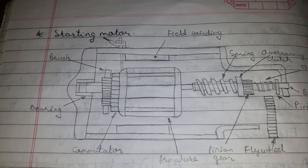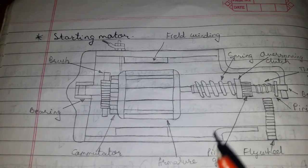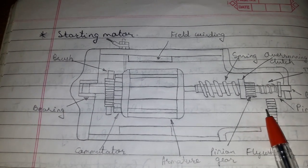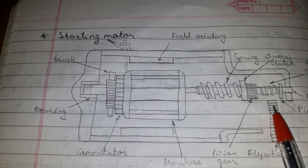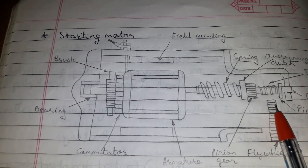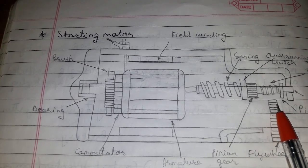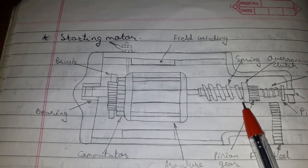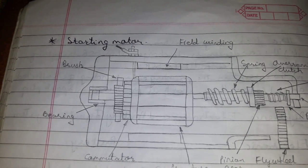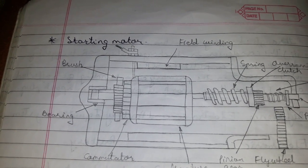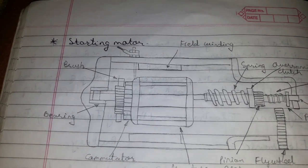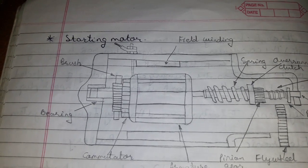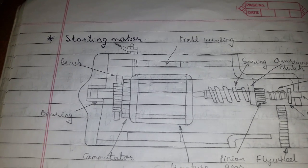When the starter switch is pressed, the motor shaft pinion moves and locks with the gear on the engine flywheel. In this locked position, the motor armature shaft cannot rotate, so it draws more current and produces maximum torque.